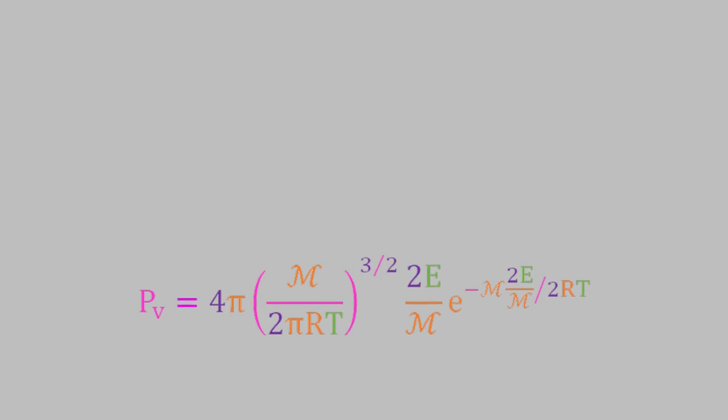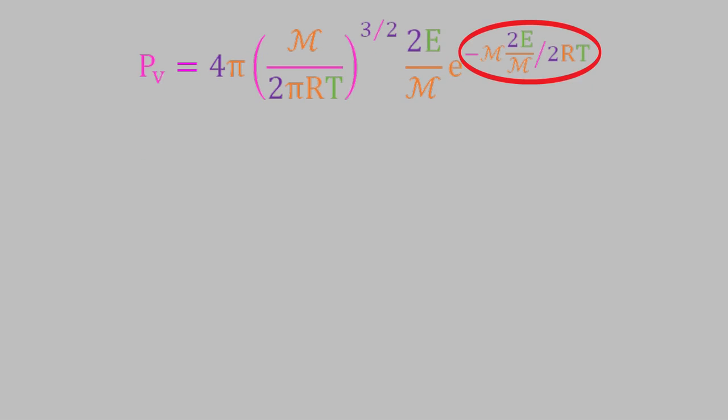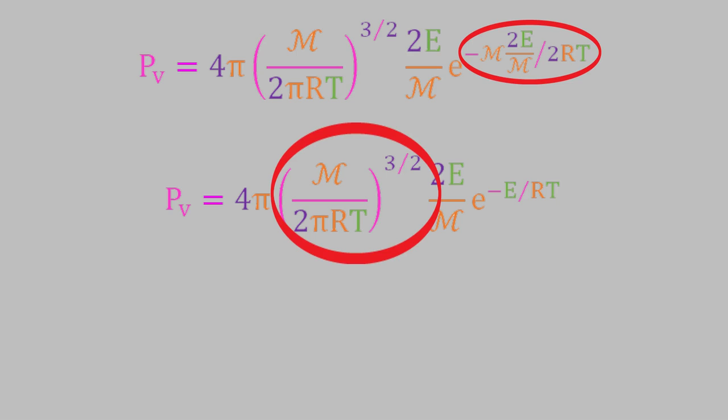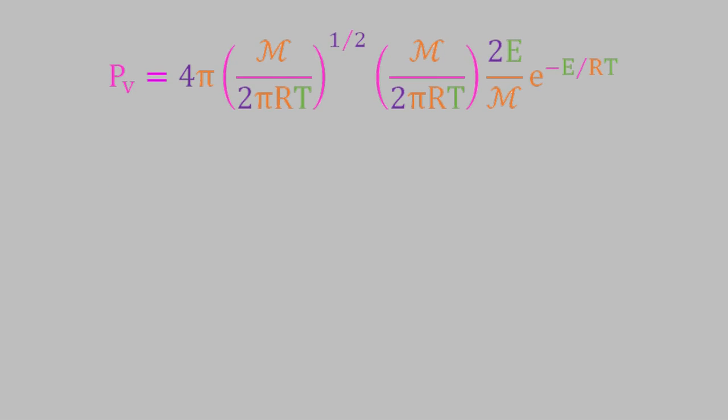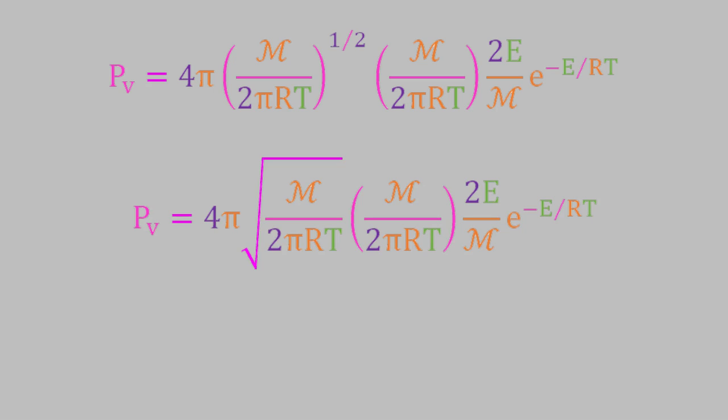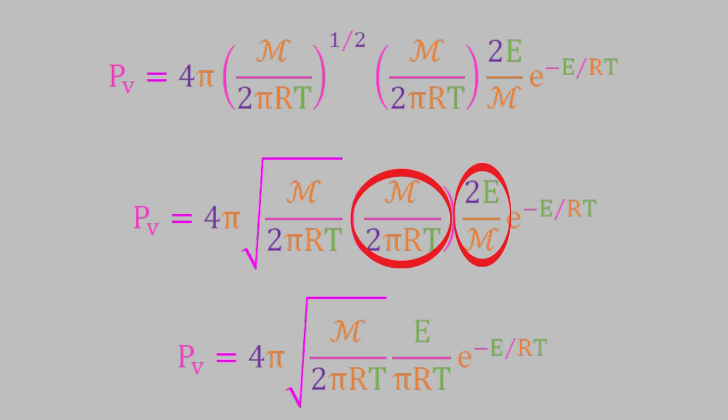We can simplify this equation quite a bit. First, let's look at the exponent here. We can cancel the two masses and the factor 2, which leaves us with negative e over RT in the exponent. We can also simplify the middle of the equation. To do that, it'll be easier if we break up this term. We can split it into two similar terms, one with an exponent of 1 half and one with an exponent of 1. An exponent of 1 half is the same as the square root, so we can rewrite that term this way. Meanwhile, notice that the 2 and the m in the other term will cancel with the 2 and m in this term. That leaves us with this equation. This is the Maxwell-Boltzmann distribution again, but this time it describes the distribution of kinetic energies of the molecules instead of the velocities. So, this equation is even more useful than the one that we had earlier.